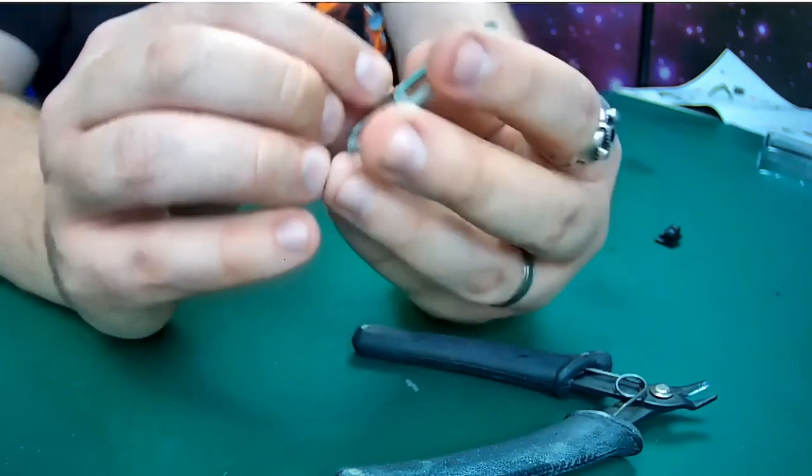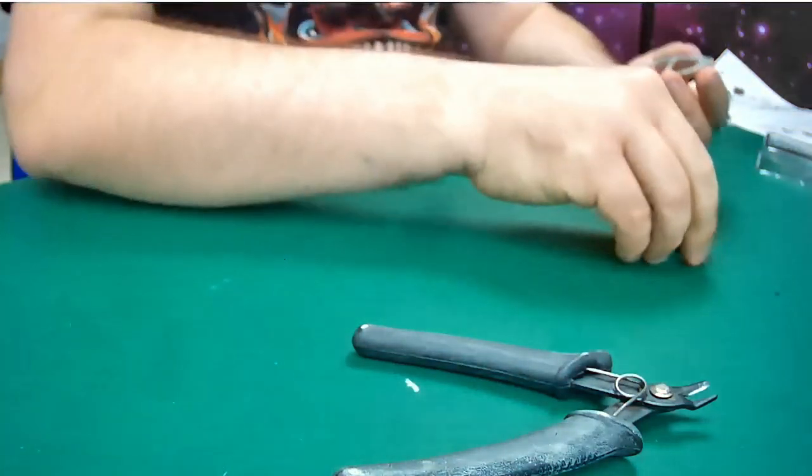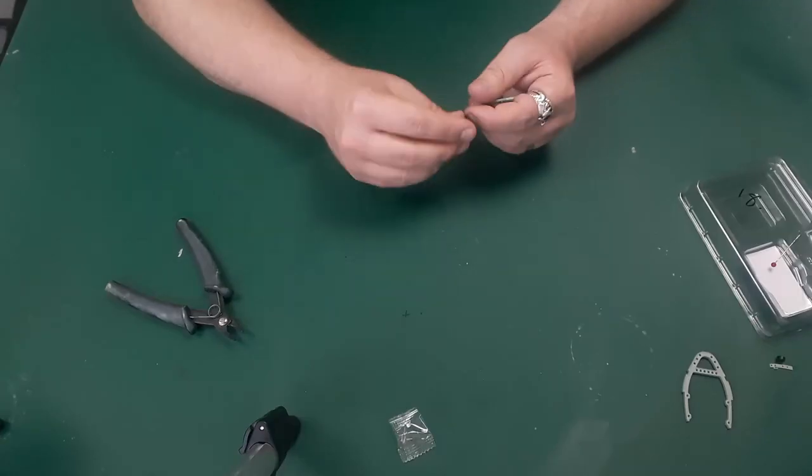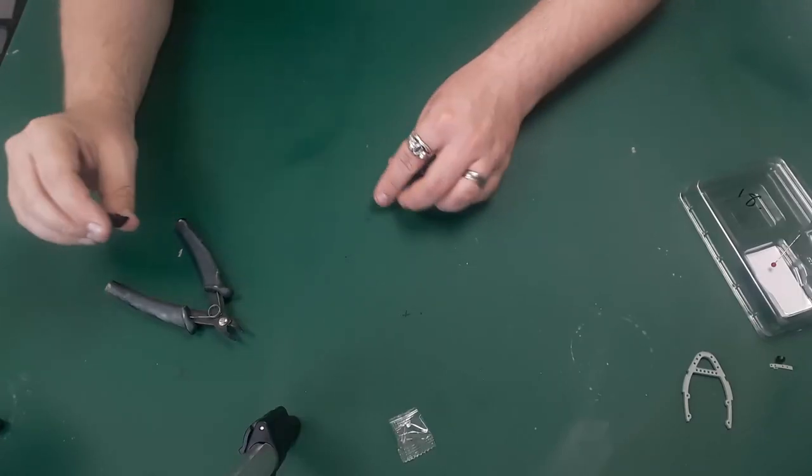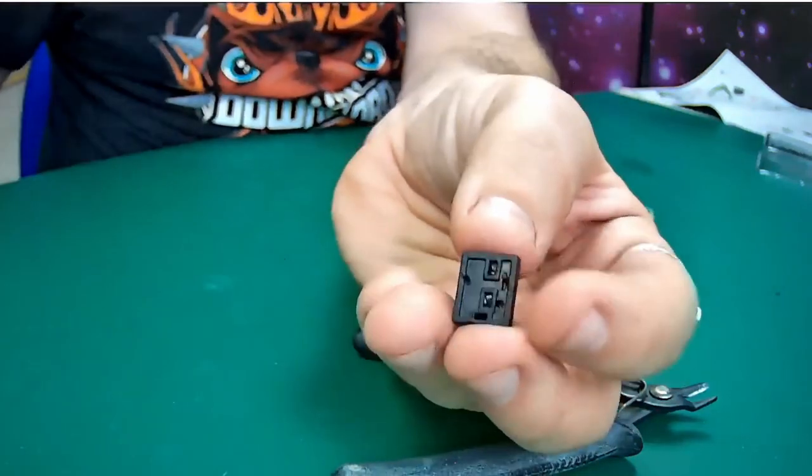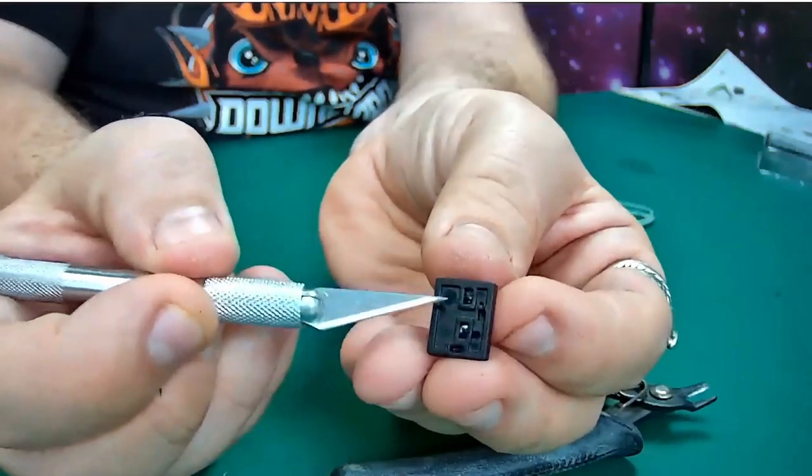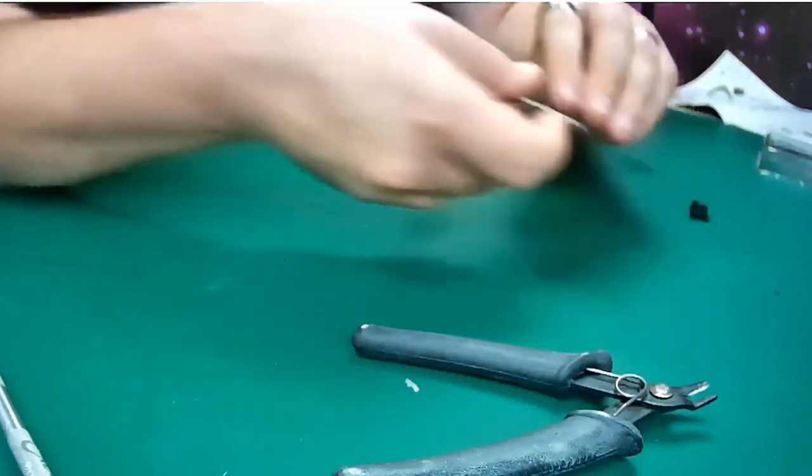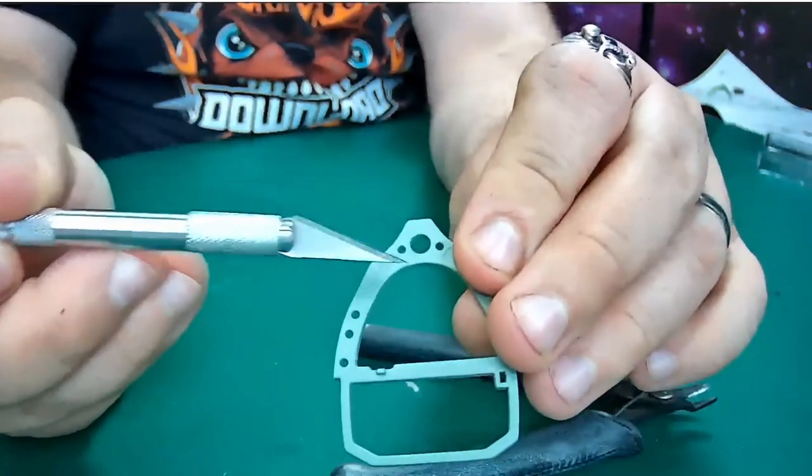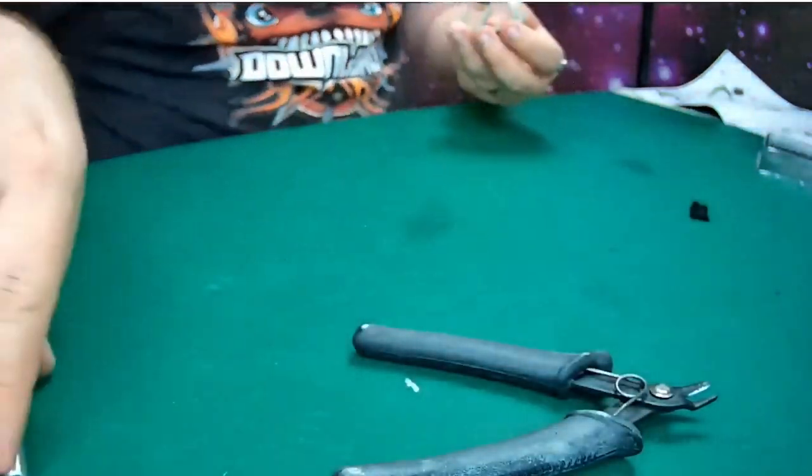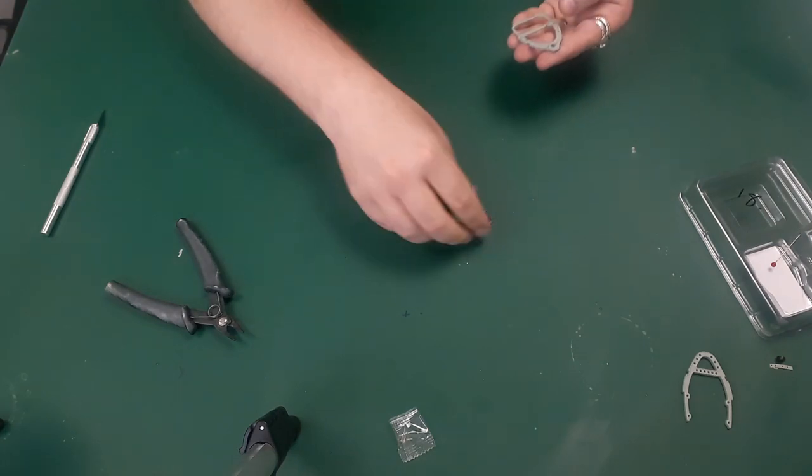This is the side that you need to do these first parts with. You've got two little pegs on the back of this part. So you've got one, two, and they fit into these two holes at the top here, one and two.